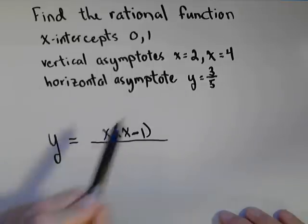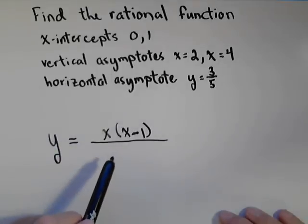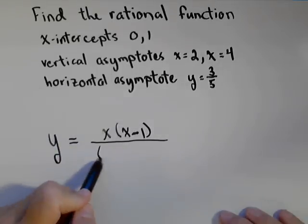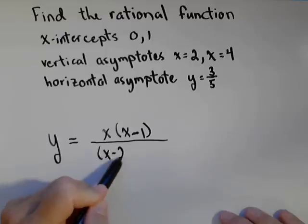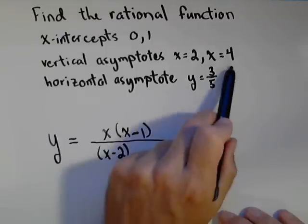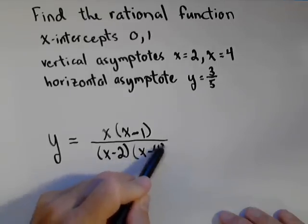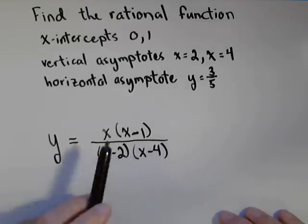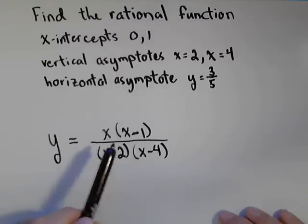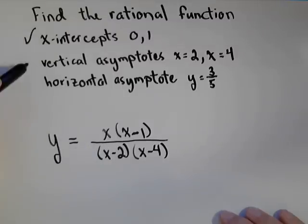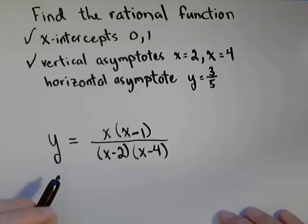Similarly, the vertical asymptotes come from zeros in the denominator. So if x equals two is a vertical asymptote, x minus two must be a factor in the denominator. If x equals four, you guessed it, x minus four. Now what we have is a rational function that has x-intercepts at zero and one and vertical asymptotes at two and four.